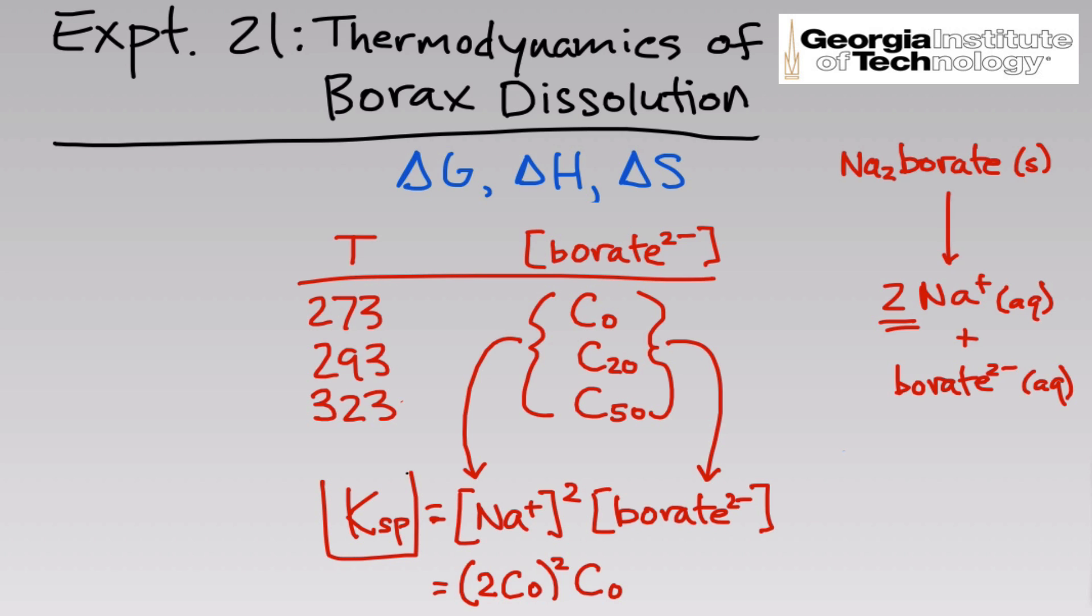We can calculate the Ksp's at each temperature directly from those borate 2- concentrations. So we might denote these as Ksp0, Ksp20, and Ksp50. From each of those, we can then use the relation that delta G is equal to negative RT natural log of K, in this case Ksp, to calculate three delta G's: delta G at 0, delta G at 20, and delta G at 50. There's one of the thermodynamic parameters, and delta G depends on temperature, so we'll have three different delta G's for the three different temperatures.